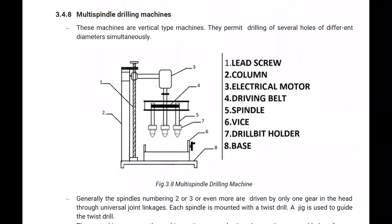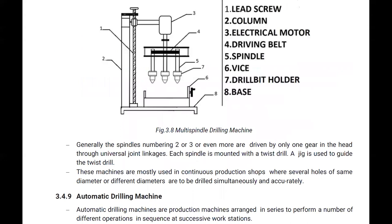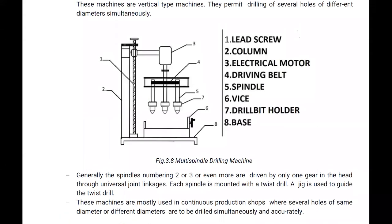Next is the multi-spindle drilling machine. These machines are vertical type and permit drilling of several holes of different diameters simultaneously. Instead of changing tools, we use multiple spindles — generally two, three, or even more — driven by one gear and connected through universal joint linkages, with each spindle mounted with a twist drill.